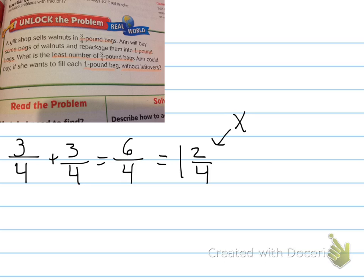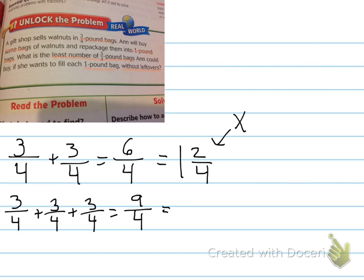Let's say we added three bags. Three plus three plus three is nine — denominator stays the same. Let's change it into a mixed number: nine divided by four is two, remainder of one, denominator stays the same. Again, not whole pound bags — she'd have two one-pound bags and a leftover of one-fourth.